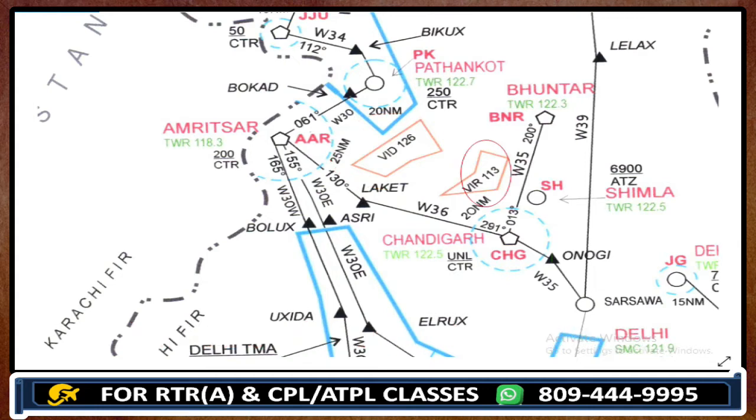Next, we can see — look over here — this is your VID126. VI is Delhi. So do not make mistakes — this is not for a VOR. This is for danger area of Delhi number 26. Next, look over here — this is your restricted area of Delhi. We do have danger areas and restricted areas on this chart.